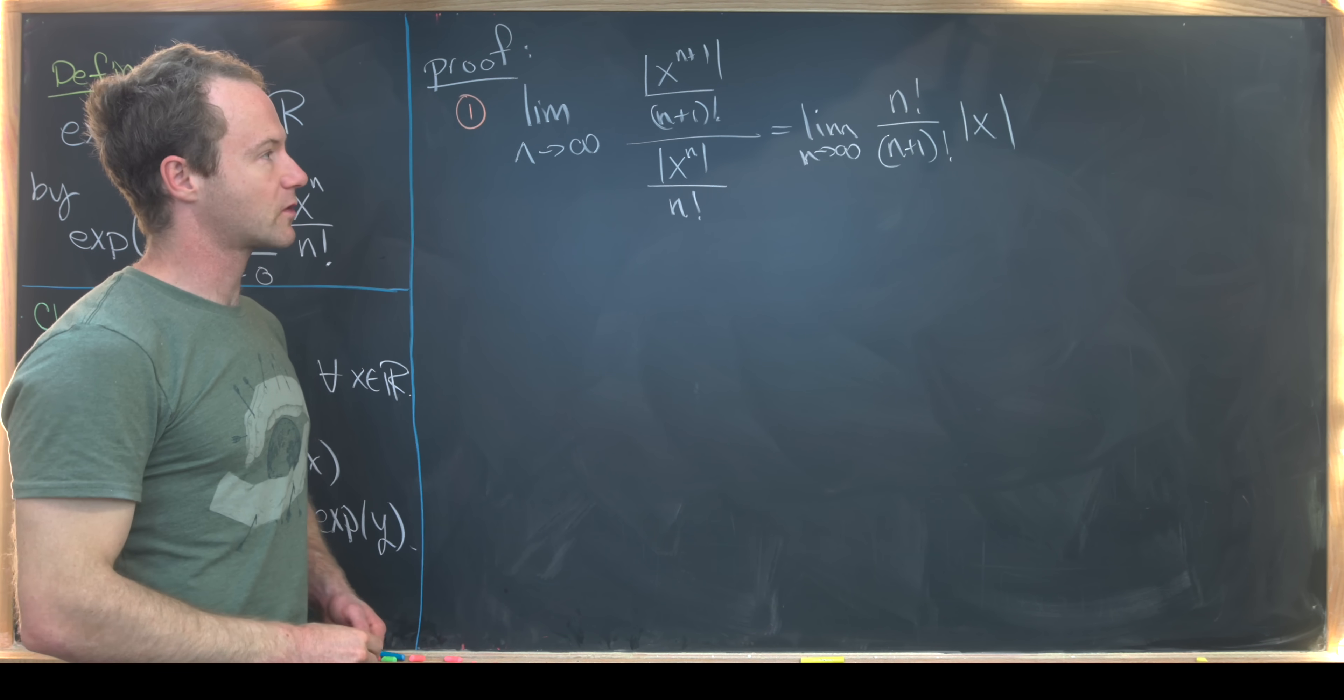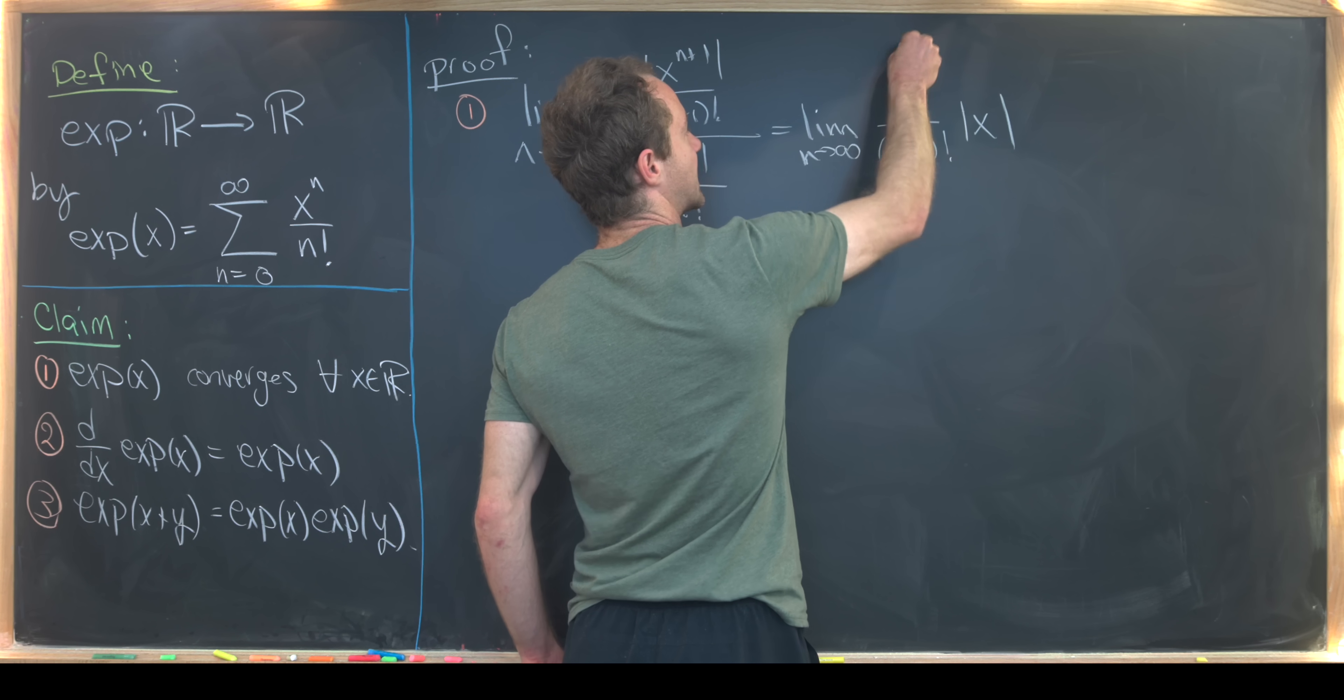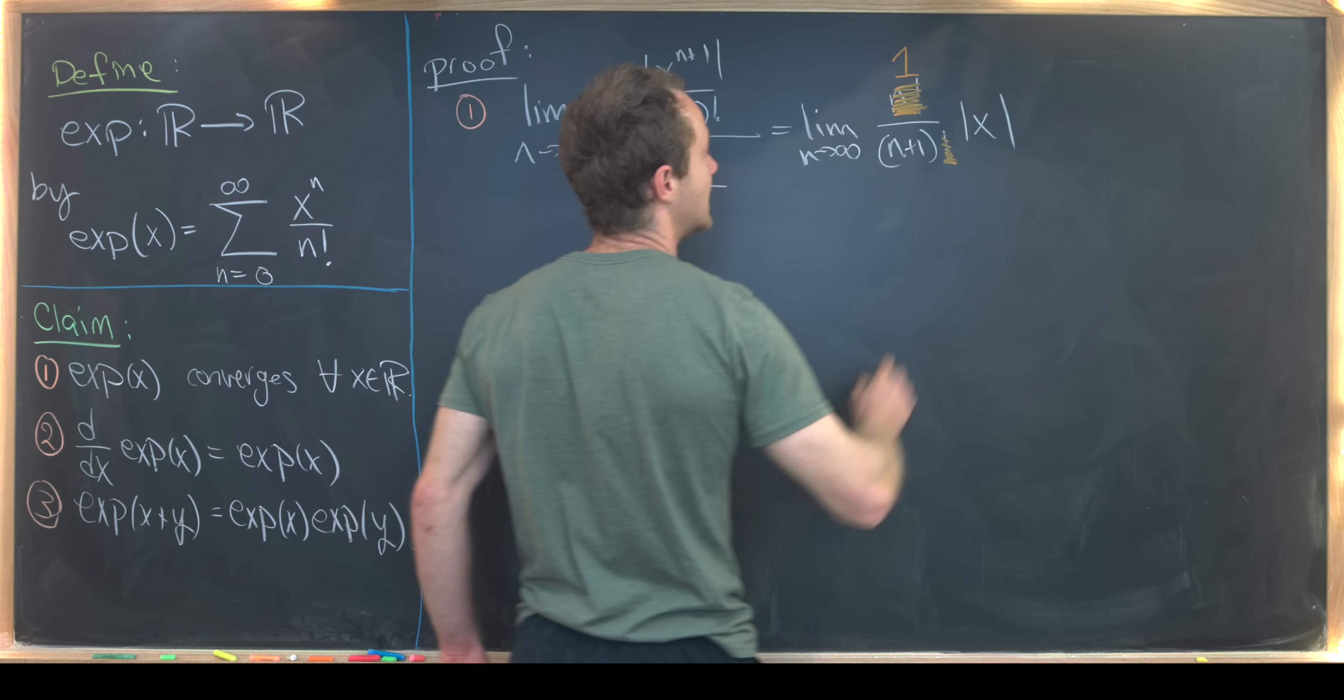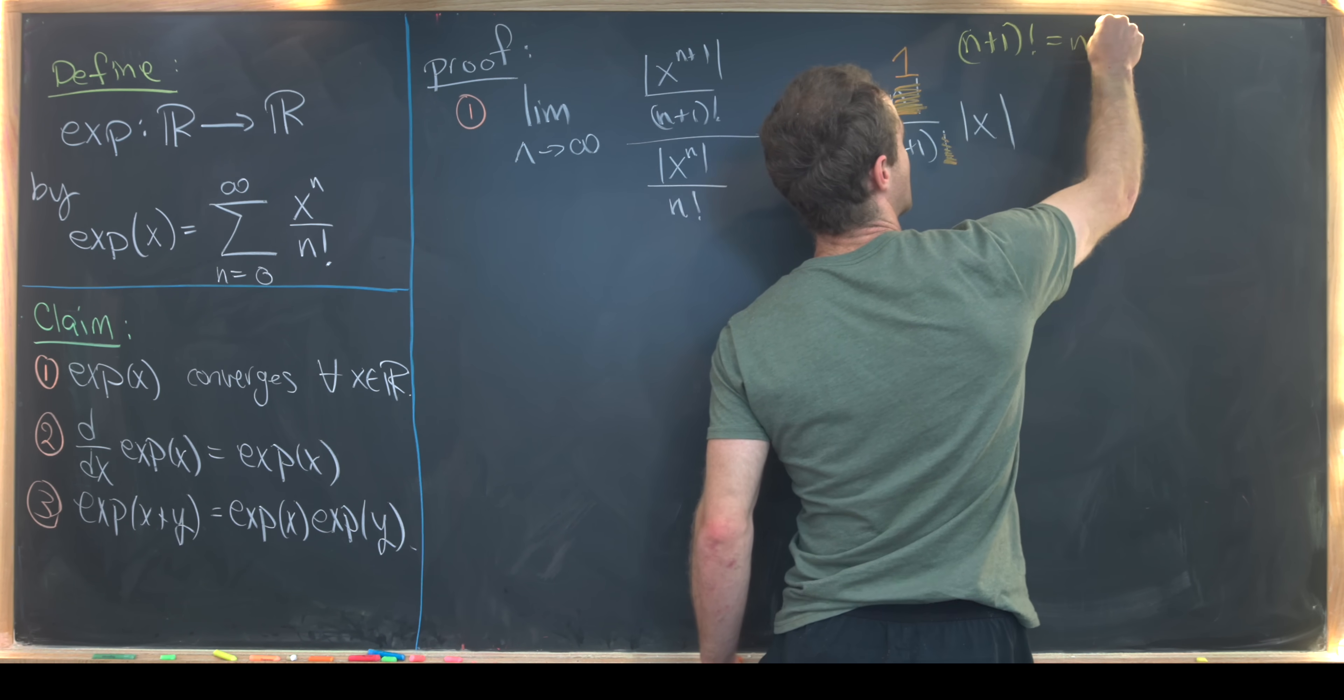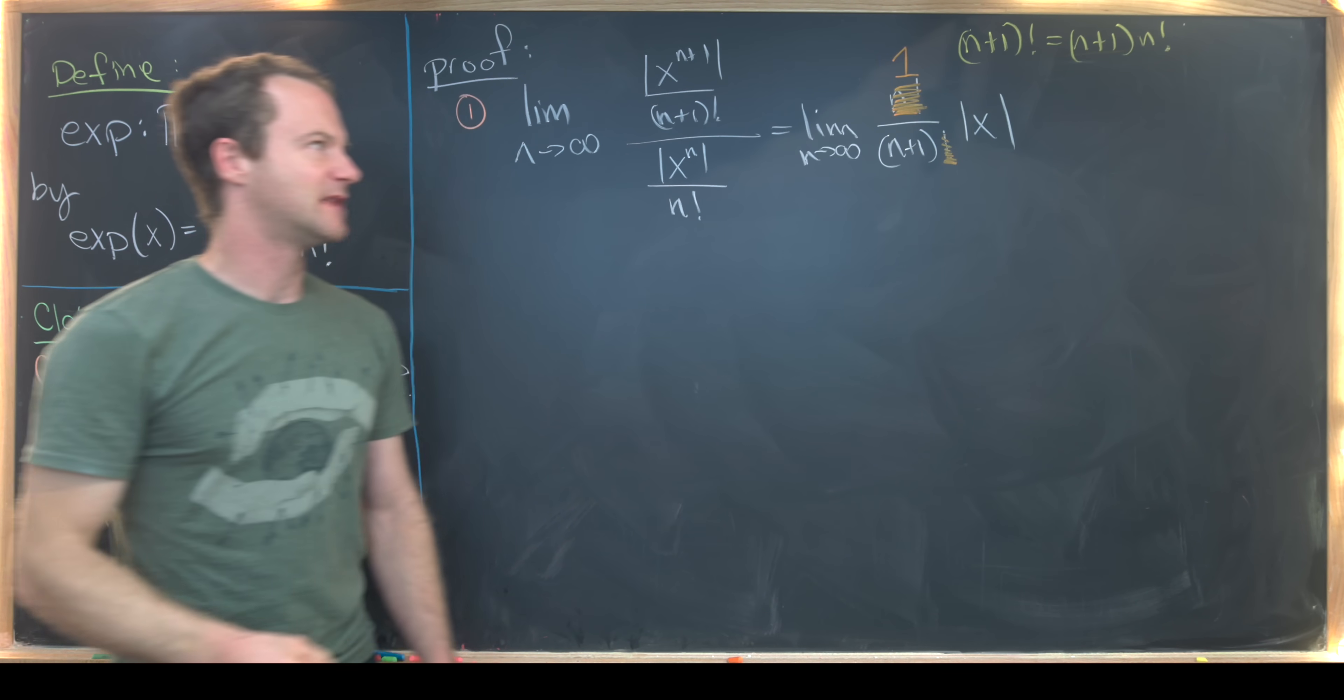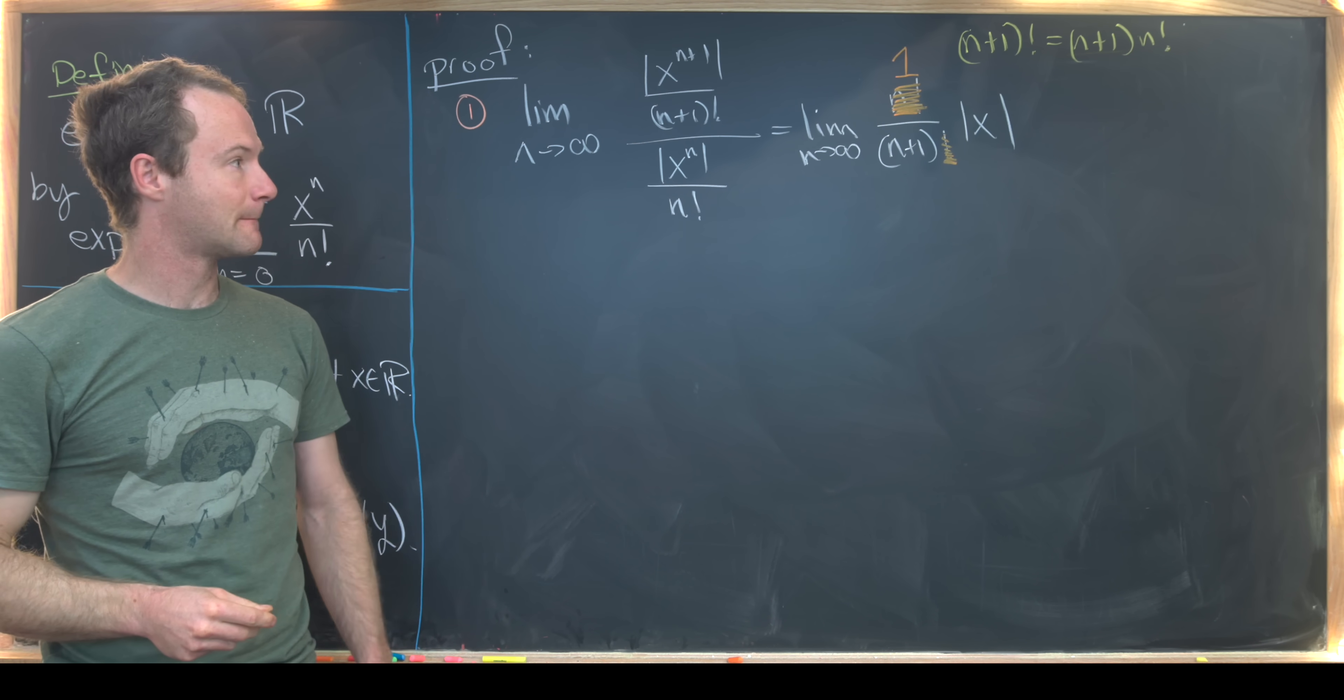But now we can just do some quick arithmetic on that and see that we get the limit as n goes to infinity of n factorial over (n+1) factorial times the absolute value of x. But the really important thing here is that this n factorial will cancel this (n+1) factorial down just to n+1. And that's because (n+1) factorial can be rewritten as (n+1) times n factorial. That's a standard simplification strategy when it comes to things like this.